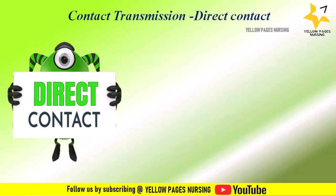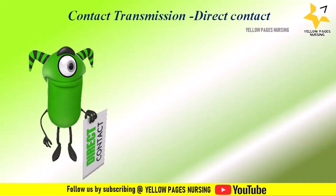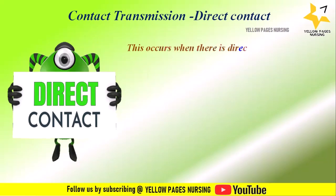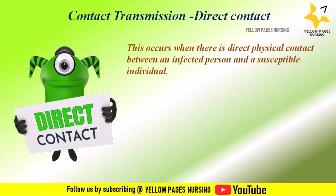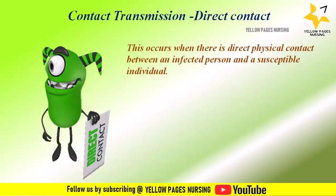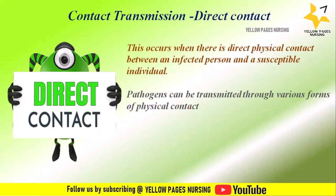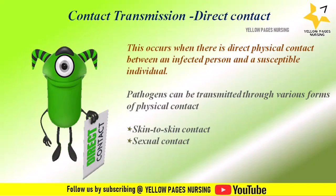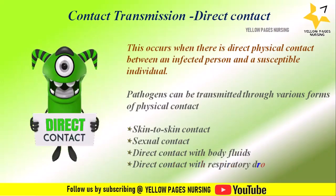Let's discuss how direct contact and indirect contact transmission occurs. Direct contact transmission occurs when there is direct physical contact between an infected person and a susceptible individual. Pathogens can be transmitted through various forms of physical contact: skin-to-skin contact, sexual contact, direct contact with body fluids, and direct contact with respiratory droplets.